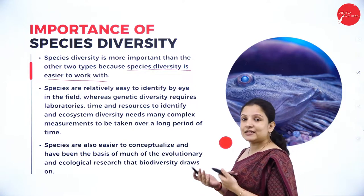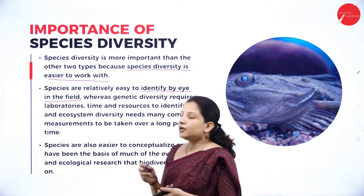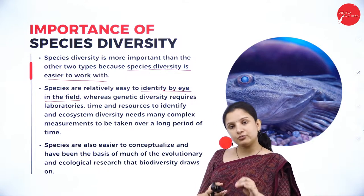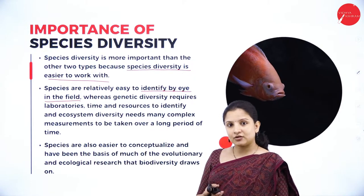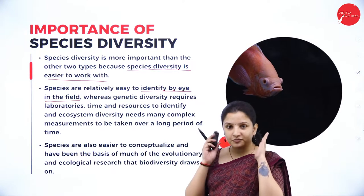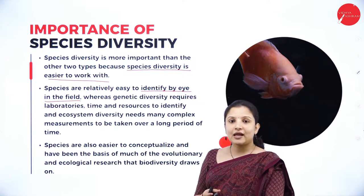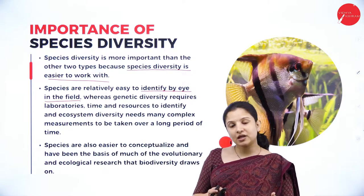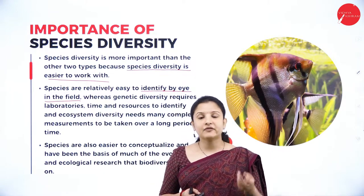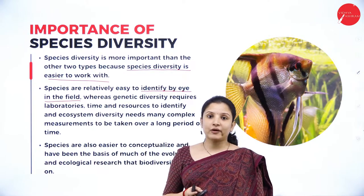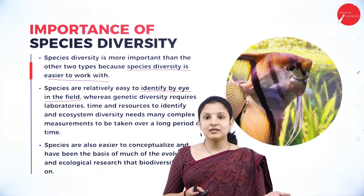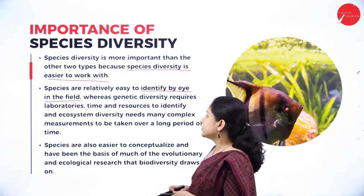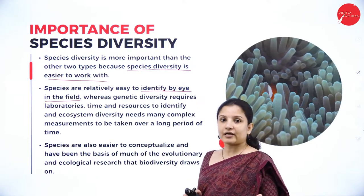Species diversity is easy to identify by eye in the field. We are all primates — monkeys, apes, langur, human beings — but we are different species, and you can tell just by looking. That is why it is easy to study them. Whereas for genetic diversity, you have to bring the organism to the lab, isolate the DNA, extract the gene, sequence it, and study thousands of genes separately to find what type of protein each produces. It is quite a laborious process.